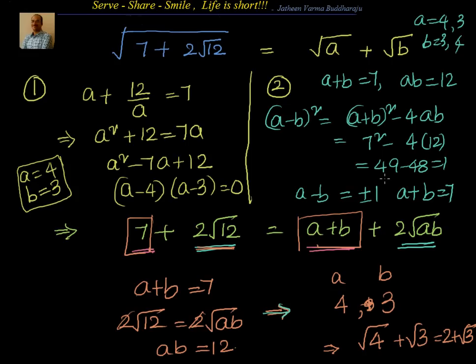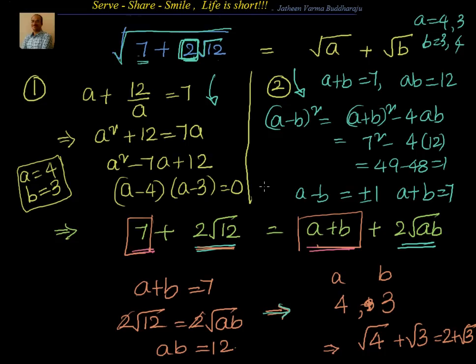Let's look at some examples and see how we can solve them easily. The key point is: whenever you have a surd with an integer value plus 2 times the square root of something, that coefficient of 2 is crucial. Whatever is inside the square root is ab, and you know a plus b and ab directly. The answer for square root of 7 plus 2 root 12 is 2 plus root 3. Squaring gives 4 plus 3 plus 4 root 3, which is 7 plus 4 root 3, and 4 root 3 equals 2 root 12.